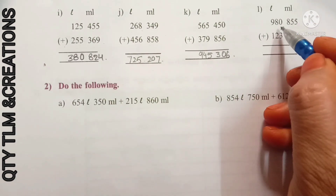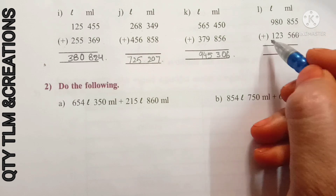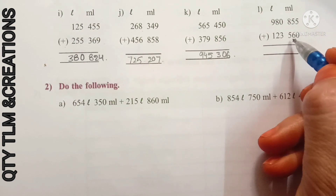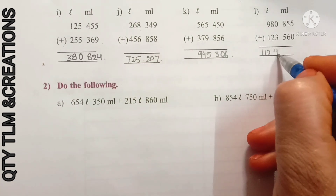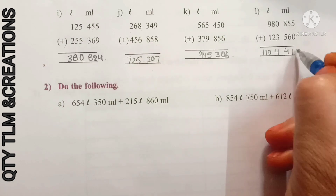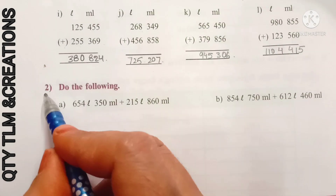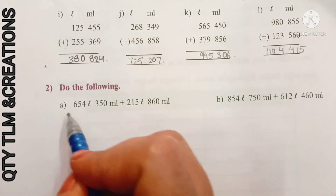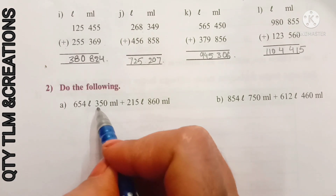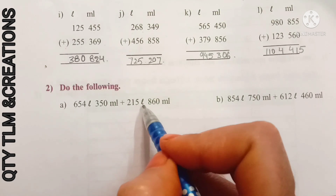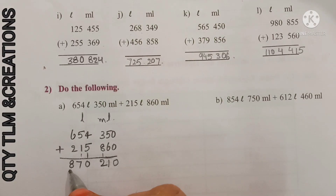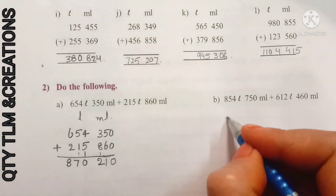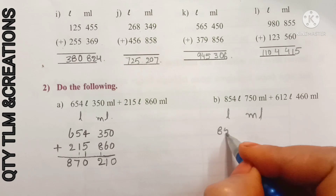Next, 980 liters 855 milliliters plus 123 liters 560 milliliters, we get 1104 liters 415 milliliters. Next question: do the following. A: 654 liters 350 milliliters plus 215 liters 860 milliliters, we get 870 liters 210 milliliters.